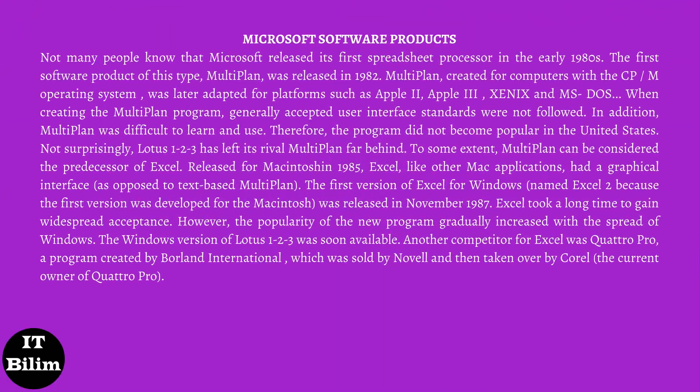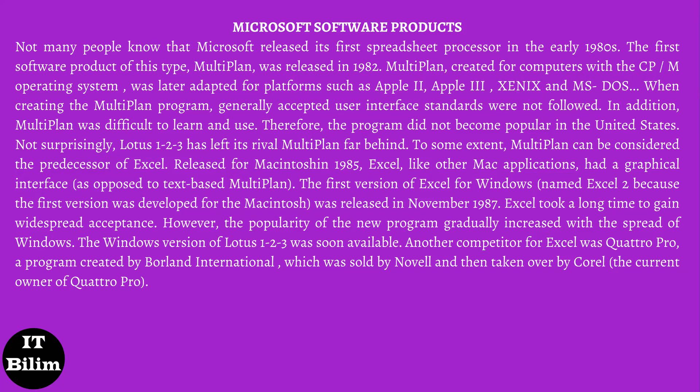Microsoft Software Products. Not many people know that Microsoft released its first spreadsheet processor in the early 1980s. The first software product of this type, Multiplan, was released in 1982. Multiplan, created for computers with the CP/M operating system, was later adapted for platforms such as Apple II, Xenix, and MS-DOS. When creating Multiplan, generally accepted user interface standards were not followed. In addition, Multiplan was difficult to learn and use. Therefore, the program did not become popular in the United States. Not surprisingly, Lotus 1-2-3 left its rival Multiplan far behind. To some extent, Multiplan can be considered the predecessor of Excel.